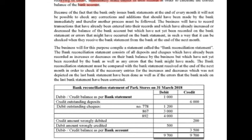However, because the bank only issues a bank statement at the end of every month, it will not be possible to check any corrections or additions that should have been made by the bank immediately. Therefore, another process must be followed. The business will have to record transactions that have already been entered into their records and which have already increased or decreased the balance of the bank account, but which have not yet been entered on the bank statement.